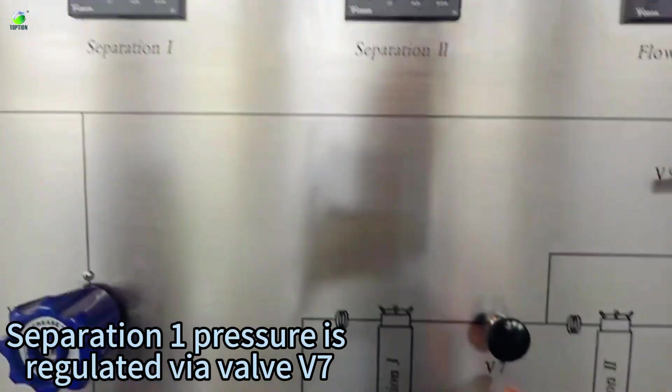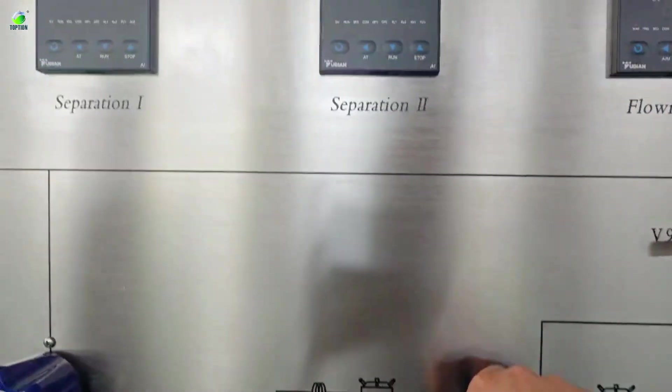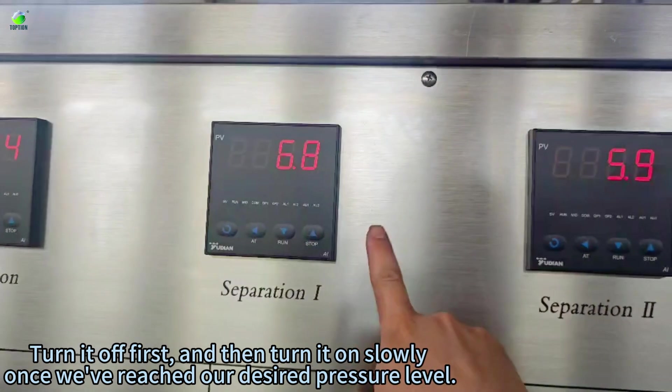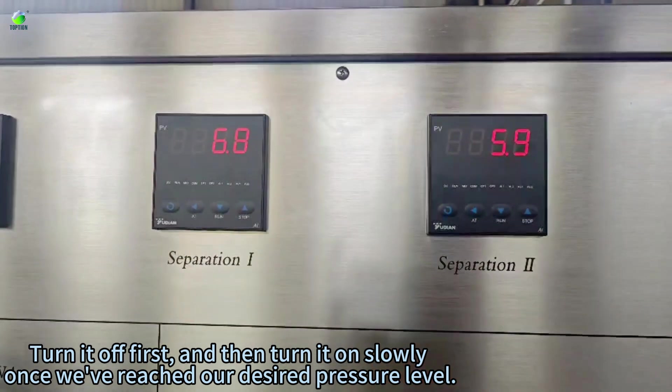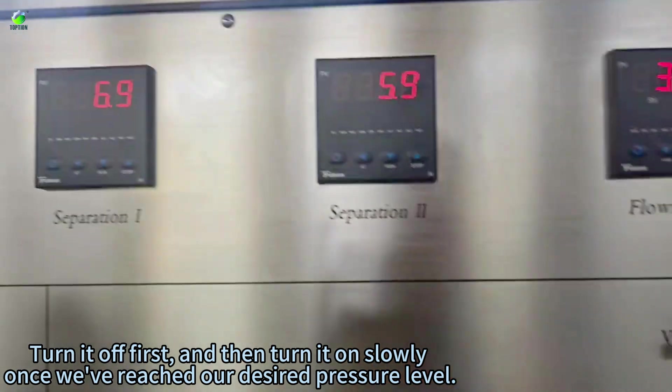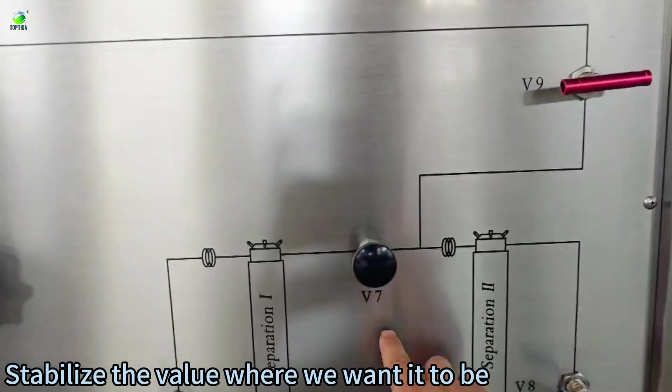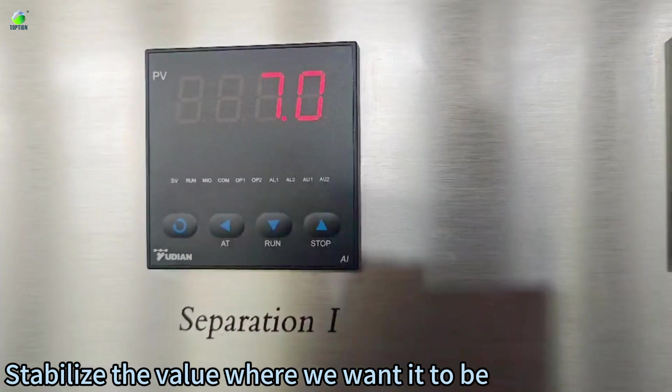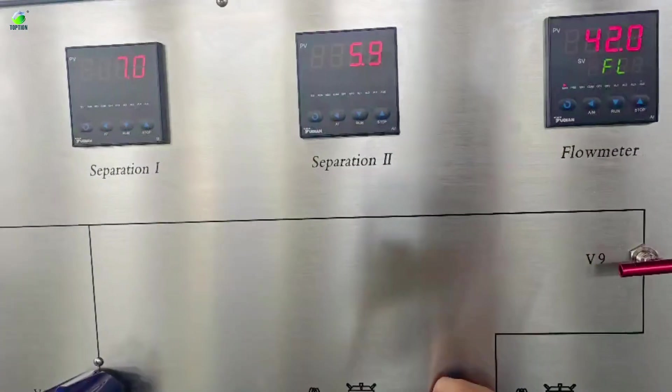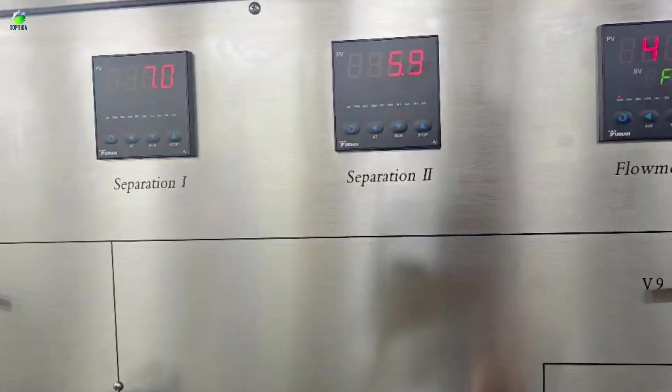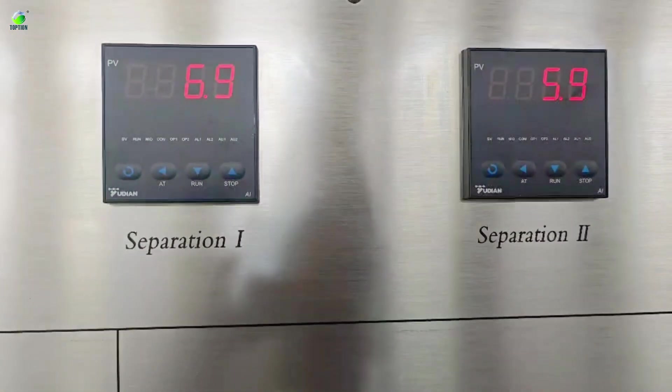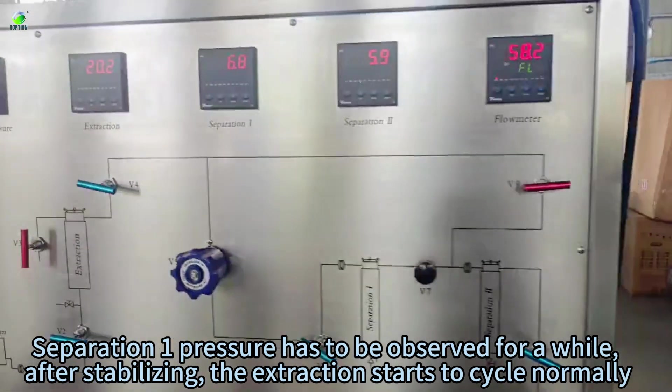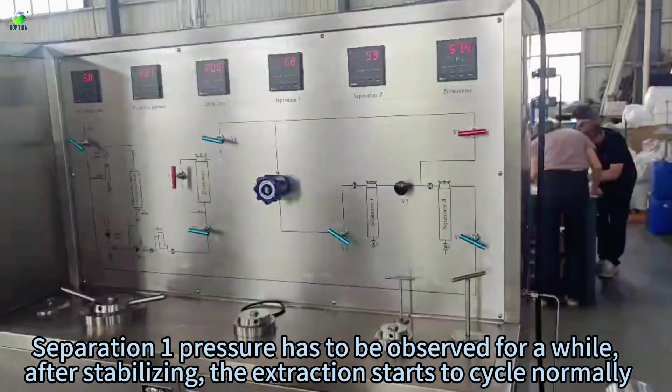Separation pressure is regulated by valve Bt. Turn it on first, and then turn it on slowly once we've reached our desired pressure level. Stabilize the value where we want it to be. Separation pressure has to be observed for a while. After stabilizing, the extraction starts to cycle normally.